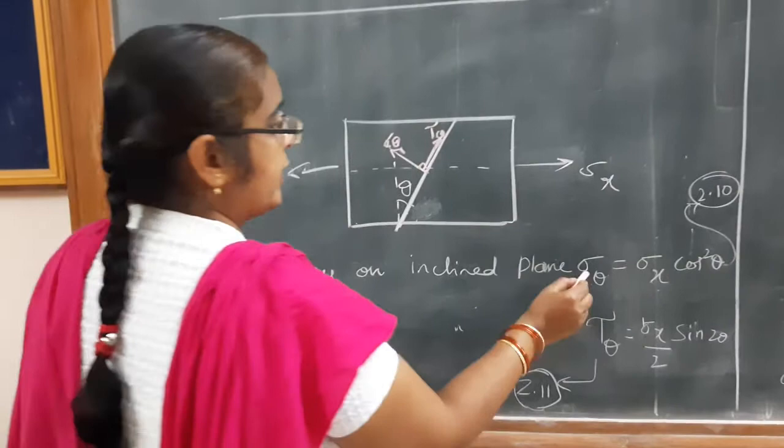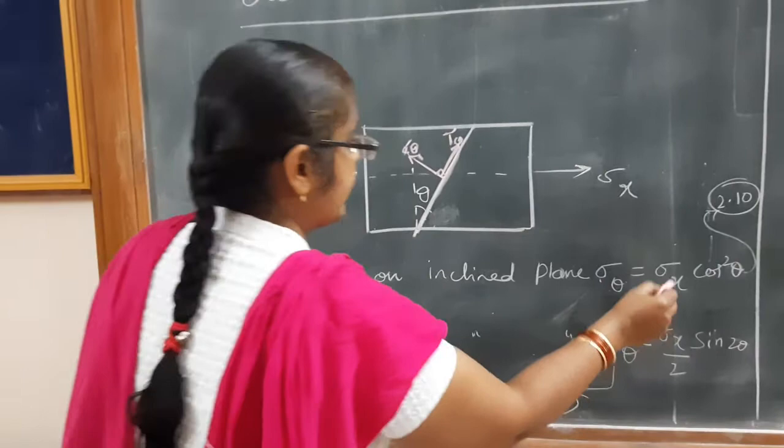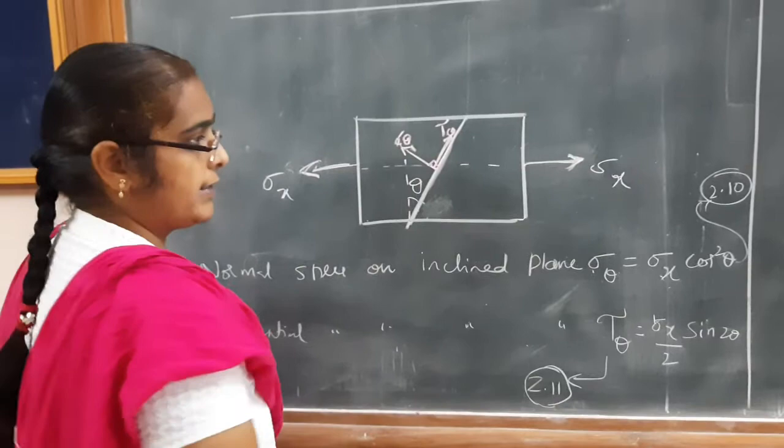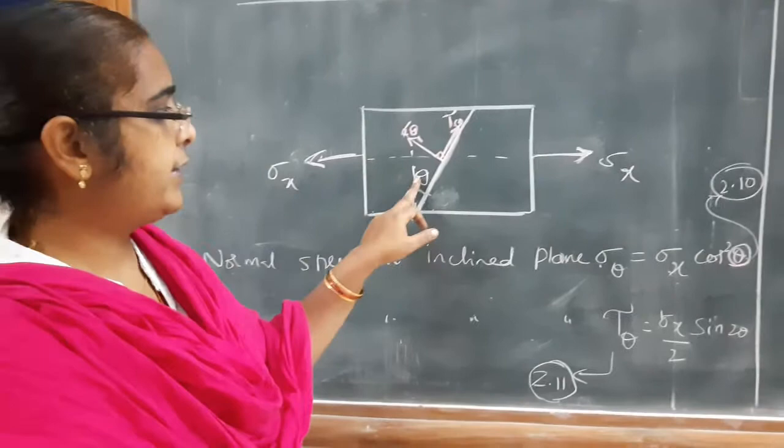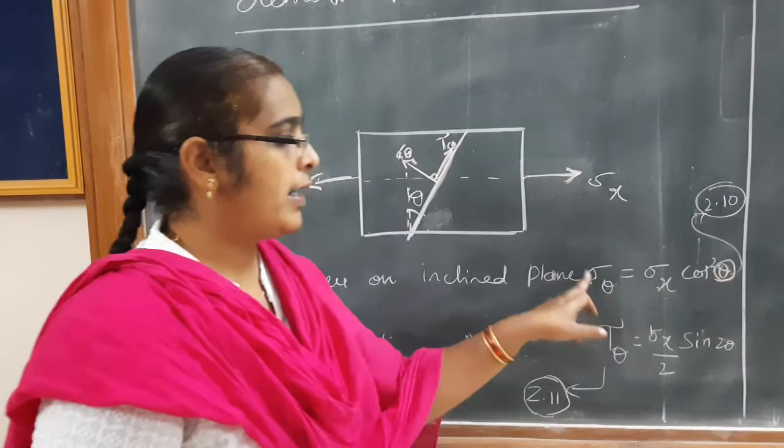What is sigma theta? It is the normal stress on this plane. What is sigma x? It is the stress acting on the member along the x-axis. What is theta? Theta is the inclination of this plane to the vertical line. If you know the value of sigma x and theta, you can find the value of sigma theta — just substitute the values.